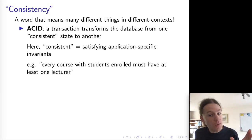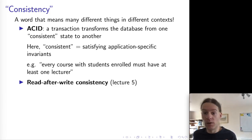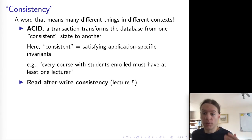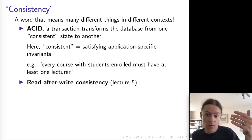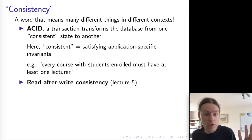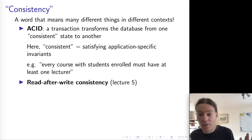But this ACID consistency is not actually what we're usually talking about in distributed systems. We saw a different model of consistency a few lectures ago — read-after-write consistency — which is that if a client makes a write and then reads back what it has just written, it should be able to see what it has just written. That has got nothing to do with consistency in the sense of ACID; it's a very different meaning of the word.